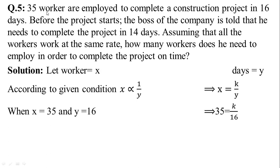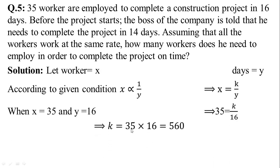In the first condition, 35 workers, so x is equal to 35 and y is equal to 16 days. Putting the values in the given relation: 35 equals k upon 16. Here 16 is divided, so it is multiplied on the other side. This implies that k is equal to 35 multiplied by 16.